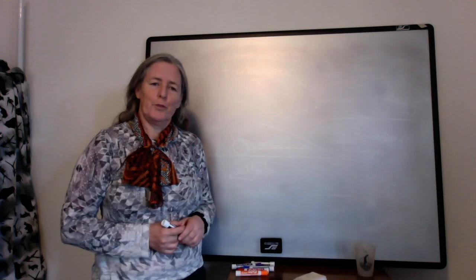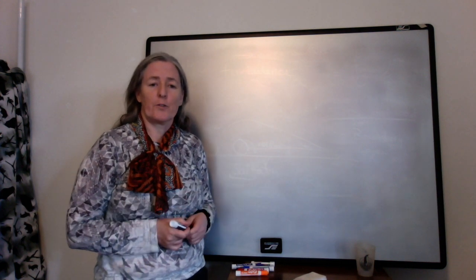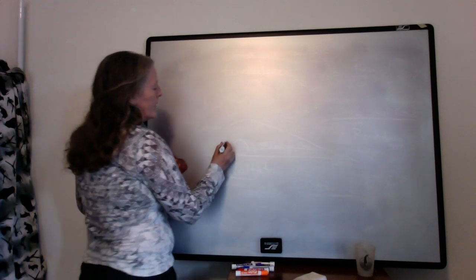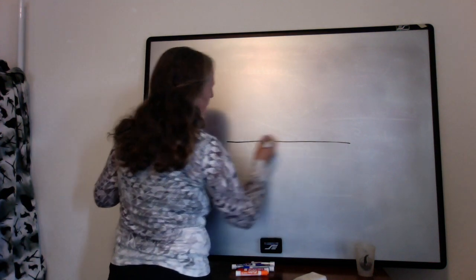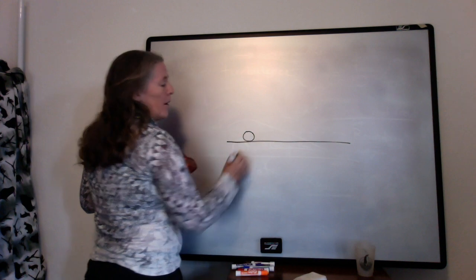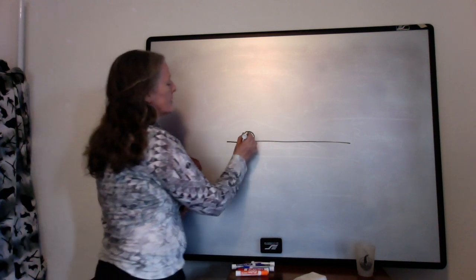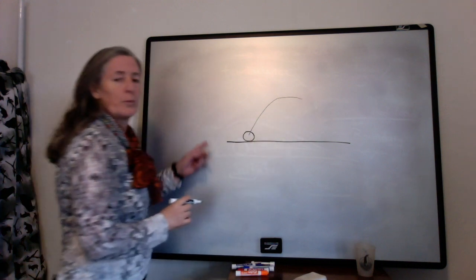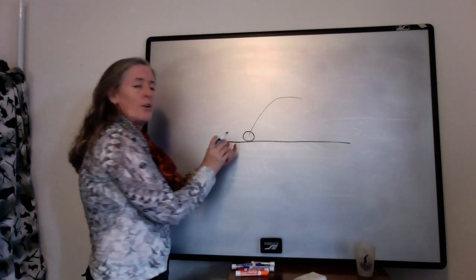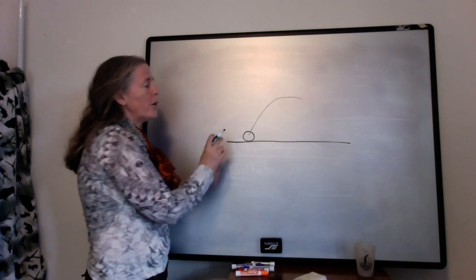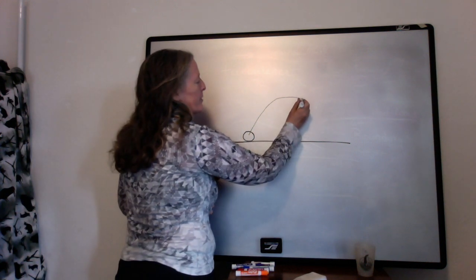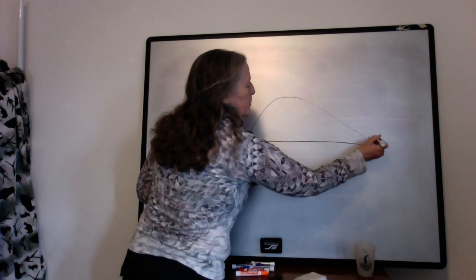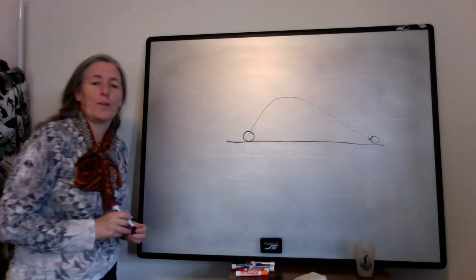When sediment starts to move, it interacts with the flow very nicely. For example, we talked about how when we have a grain on a bed that gets lifted into the flow with the Bernoulli effect, the flow pushes it downstream, and so part of the momentum of the flow goes into the momentum of the grain. And then, if it's large enough, it comes back down and sits on the bed again.